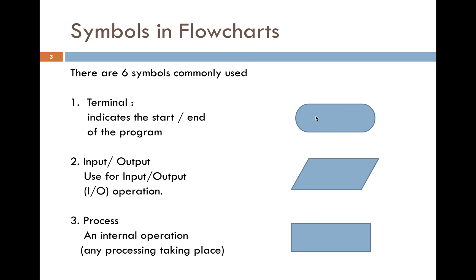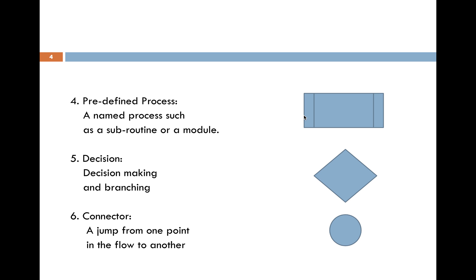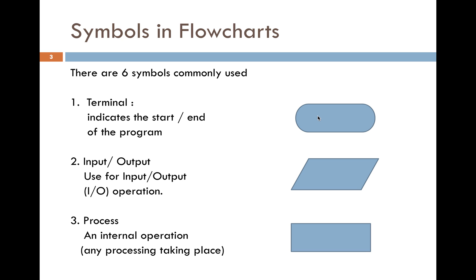Symbol one depicts the start and end of the program. Symbol two is used for input and output — it represents IO operations. Symbol three is the process, representing an internal operation. Any process taking place — for example, calculating the average or calculating the sum — would use symbol three.